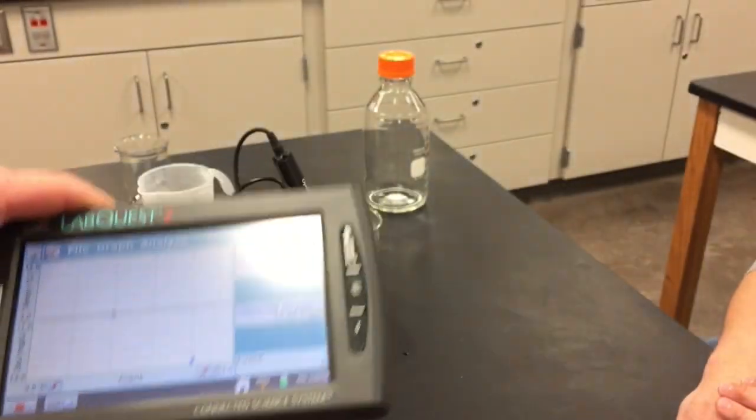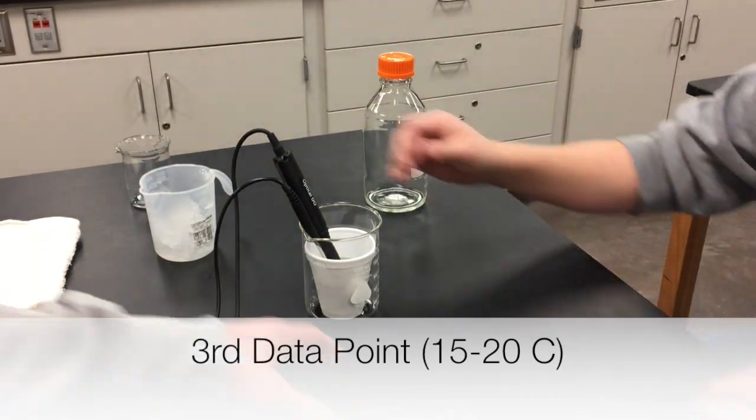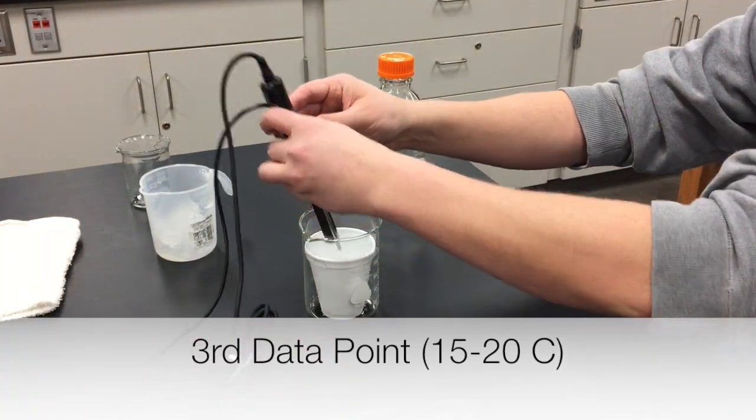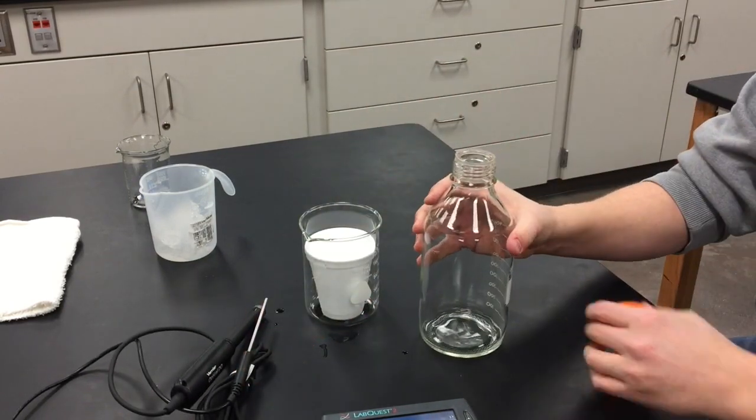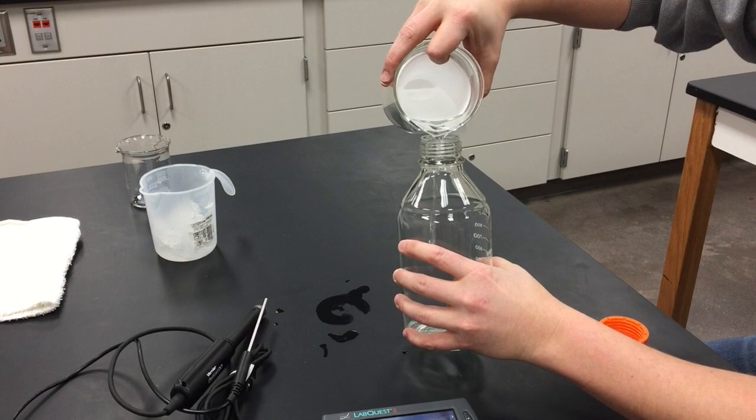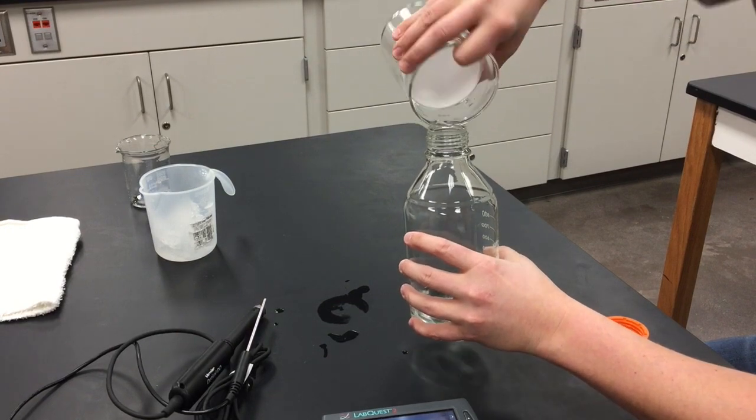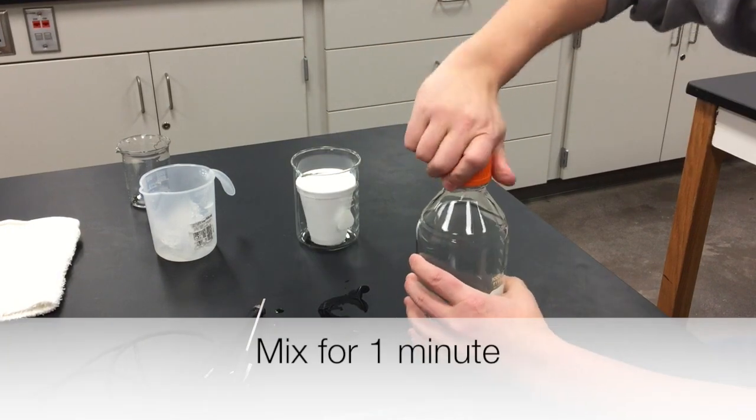Halfway done. We have two data points. Let's go ahead and obtain the third. Pour the water back into the container. Do the exact same thing you did. Again, the only difference is that the water is starting to warm up again. Mix for one minute.